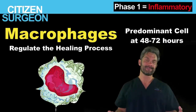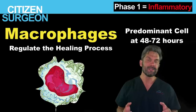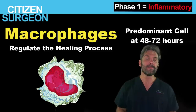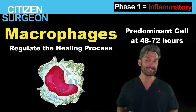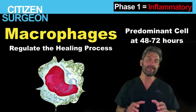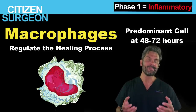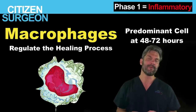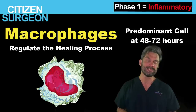What happens next? Right around 48 to 72 hours, monocytes arrive — both from the local environment and attracted by chemoattractants like complement factors C3A and C5A. They come into the wound and the monocytes become macrophages. These are the primary regulator of wound healing and the predominant cell type at 48 to 72 hours.